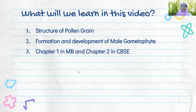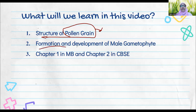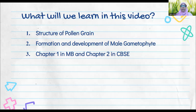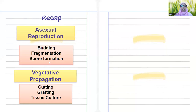In this video we are going to discuss in detail about the pollen grain. In the previous video we discussed how pollen grains are formed. Now once the formation has taken place, what is their structure and how will they carry out the fertilization — the reproduction process — that we will see in this video under the heading of formation and development of the male gametophyte.